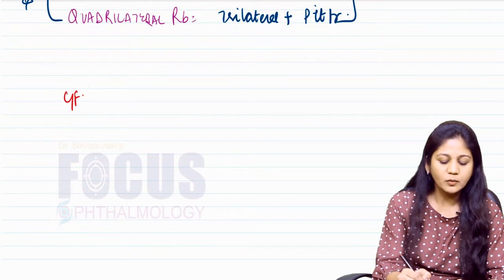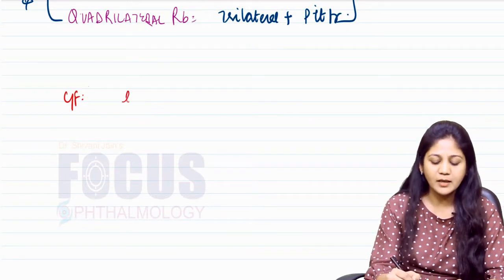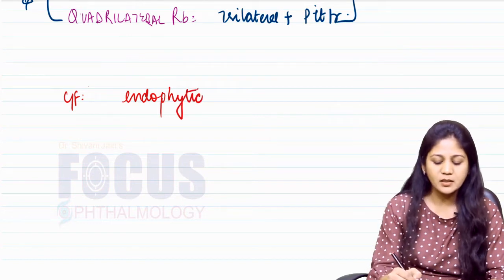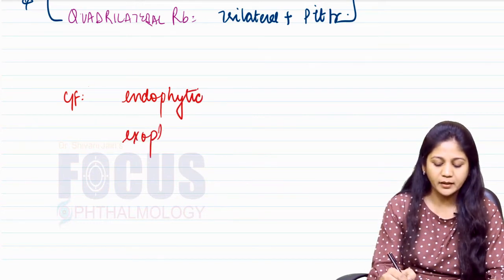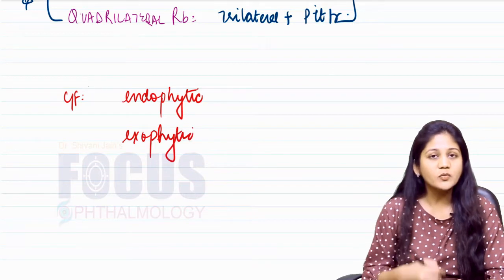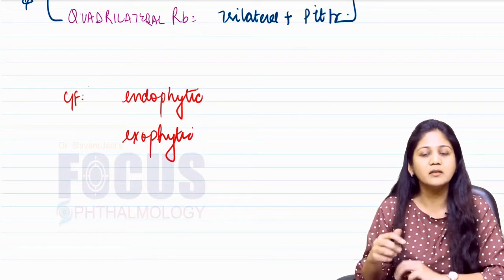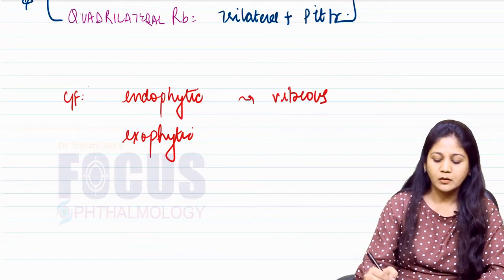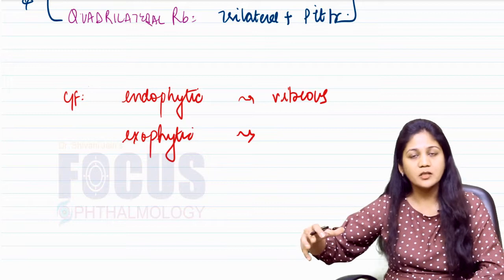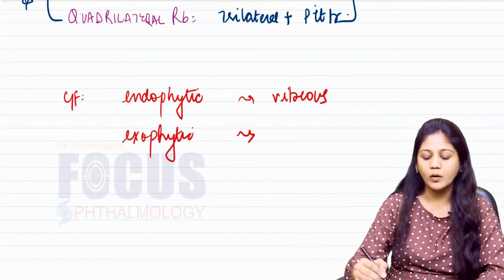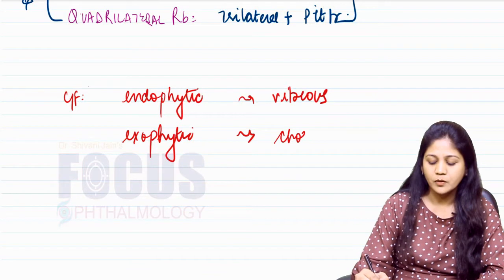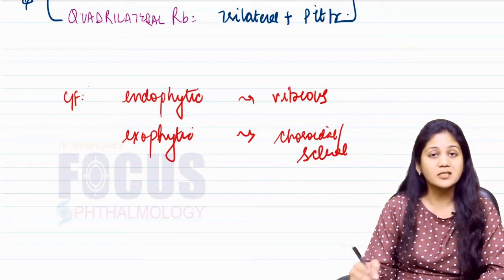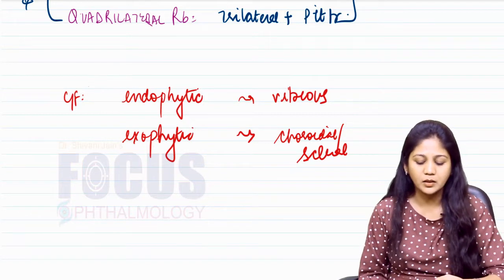Regarding clinical features and spread, retinoblastoma can be seen as an endophytic tumor or an exophytic tumor. Endophytic means it grows inside the retina or into the vitreous cavity. Exophytic means from the retina it spreads outward to the choroid, sclera, or even extrascleral structures.